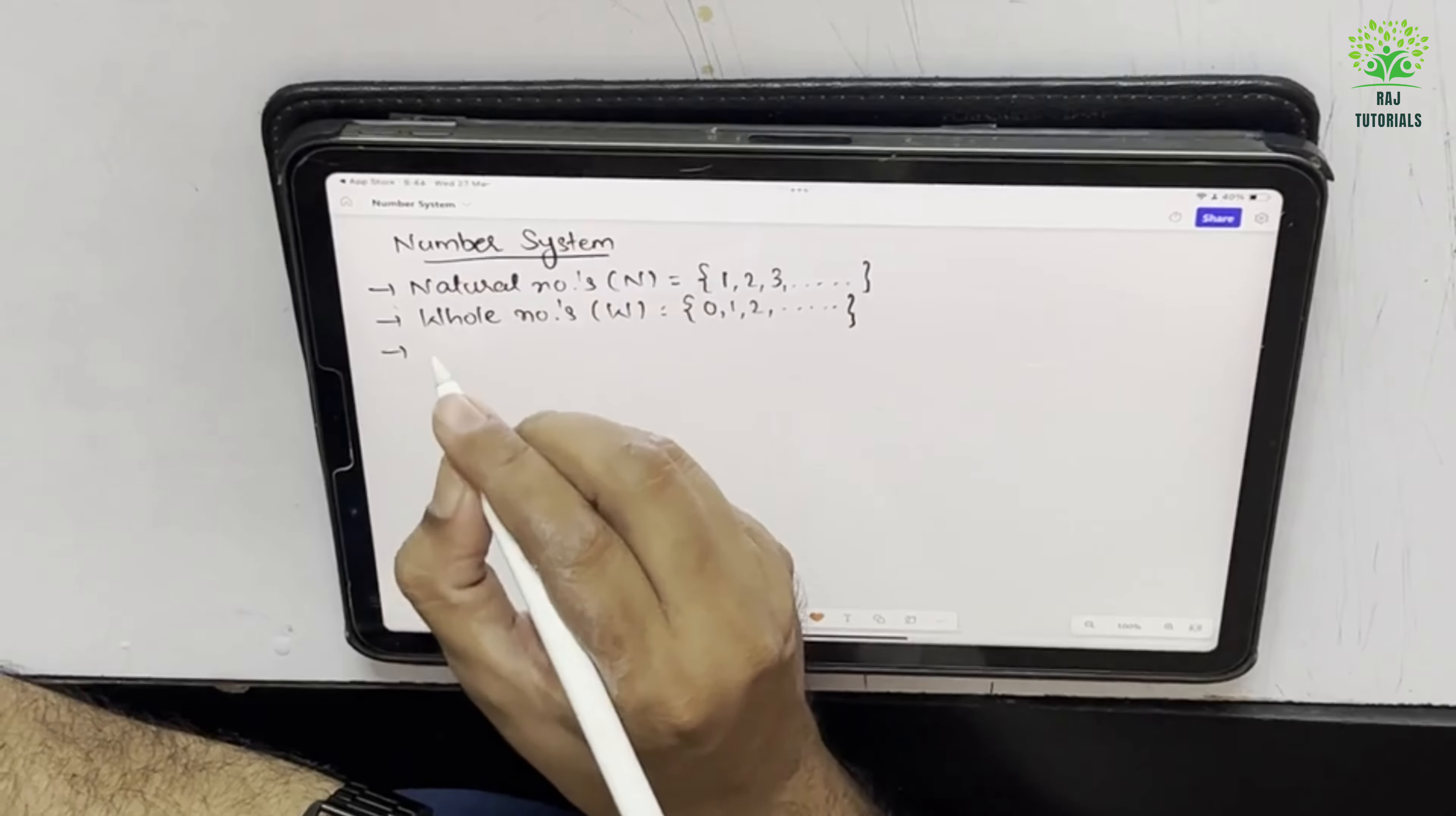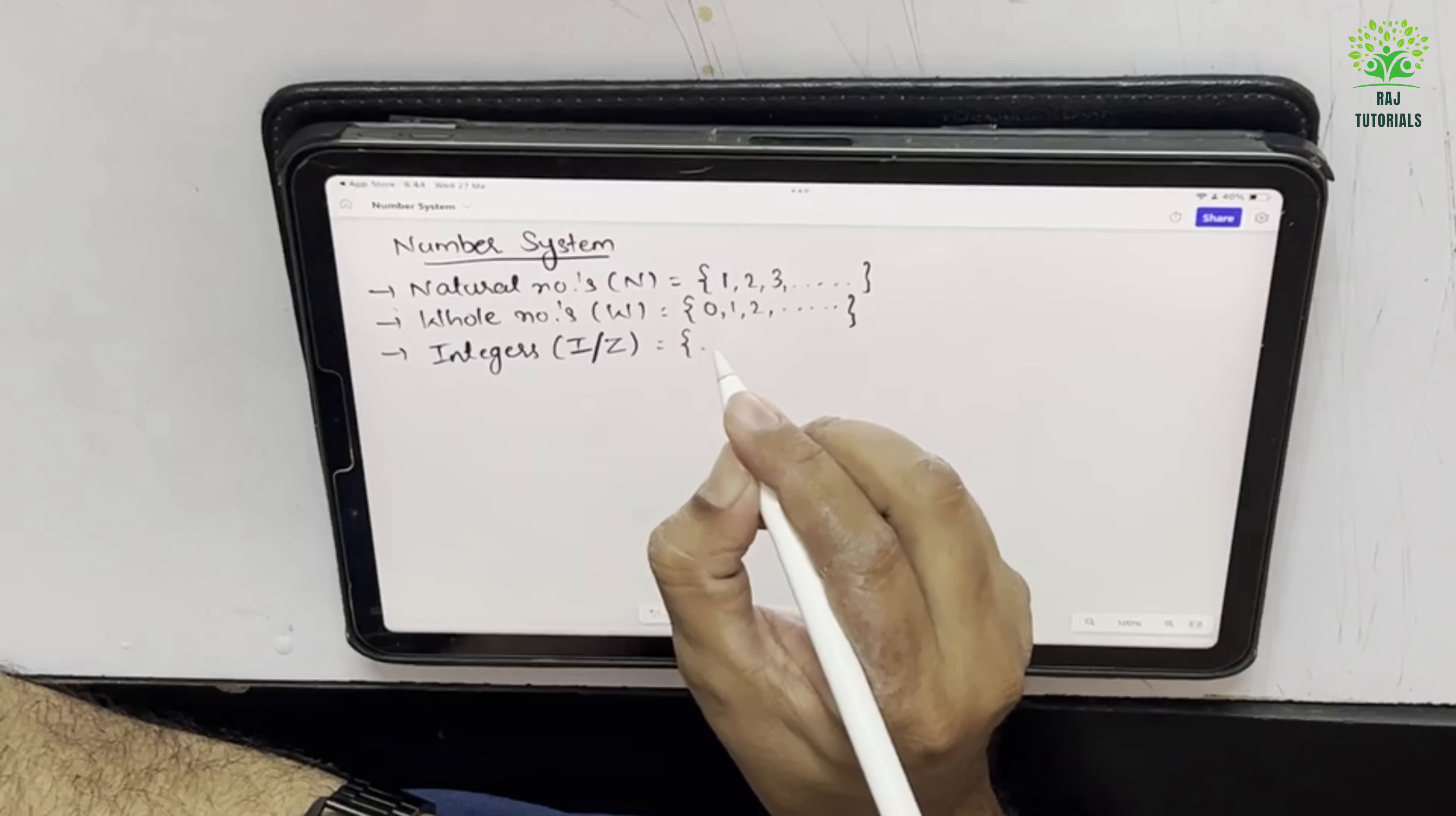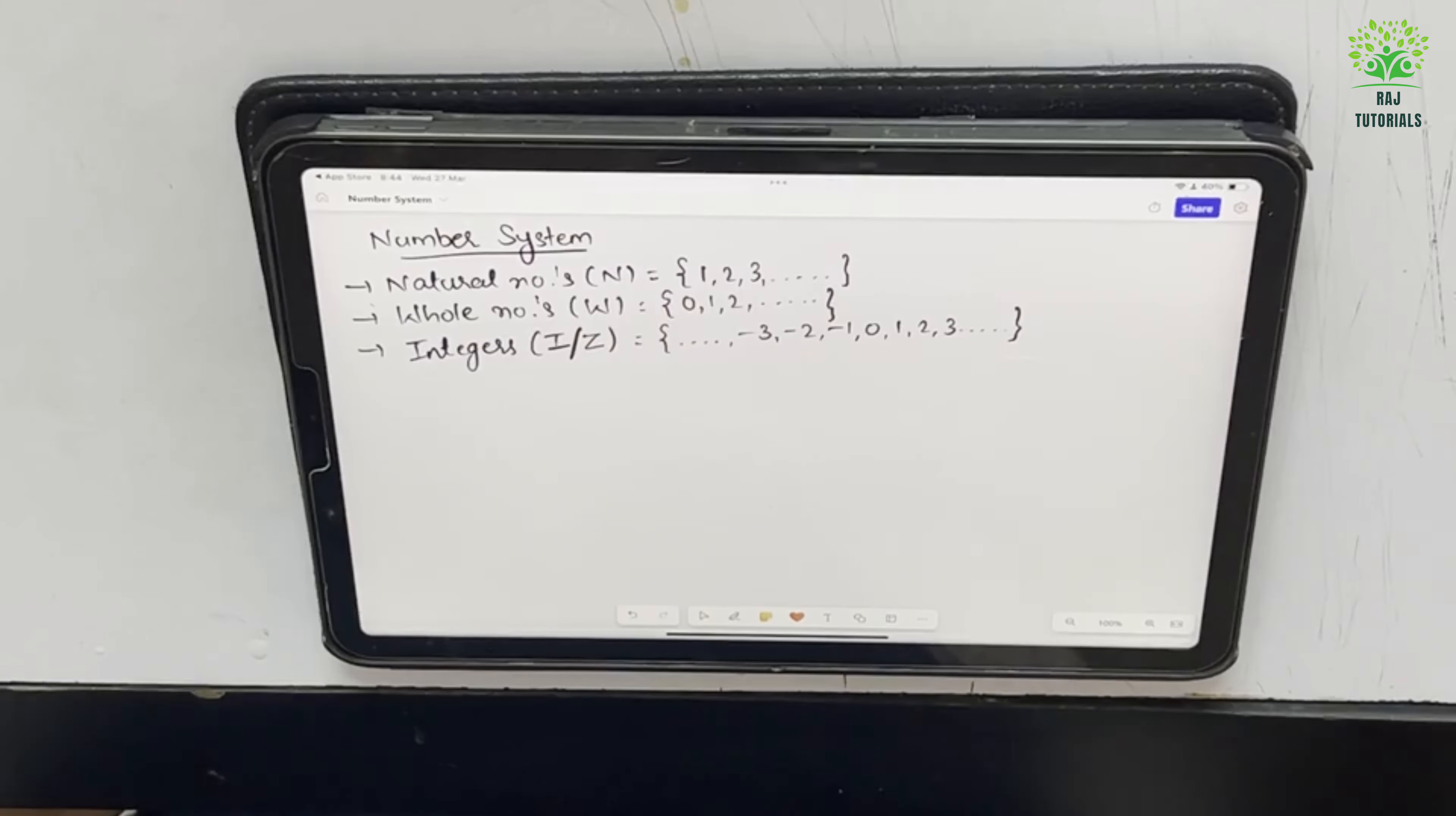Then the third are integers that are either represented by I or capital Z. So they are all the whole numbers and all its negative numbers. So minus 3, minus 2, minus 1, 0, 1, 2, 3 and both sides they are infinity.